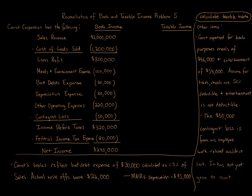The idea here is that we're given book income — all the items for Carrot Corporation — as well as additional information. Our goal is to get the taxable income item. In my class, you have a table to complete for this problem. You'll need to fill out the book-to-tax difference column in the middle. That column goes from book income, through the book-to-tax differences in the middle, and then we arrive at taxable income.